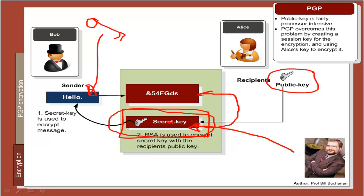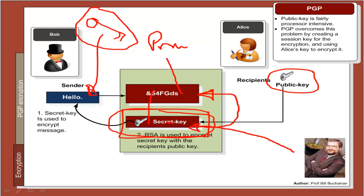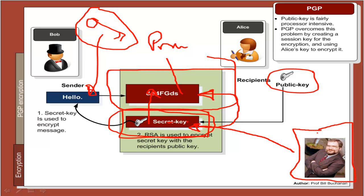This way we can use private key encryption, which is fairly fast, and also use public key to encrypt the session key so that no one will be able to decrypt the message, because it won't be possible for them to unencrypt the secret key. This was the idea behind the PGP algorithm — combining fast private key encryption with the security of public key encryption.